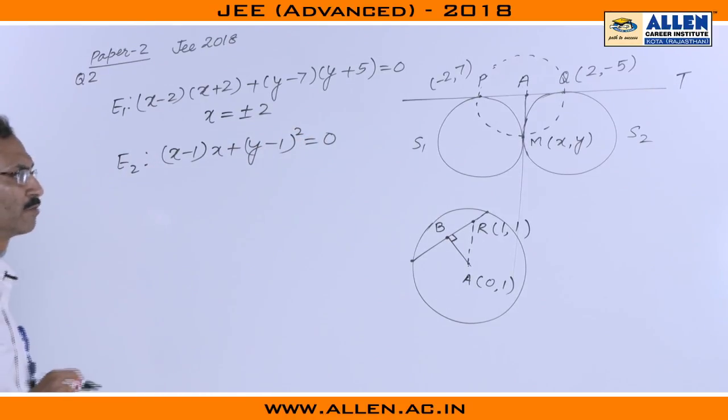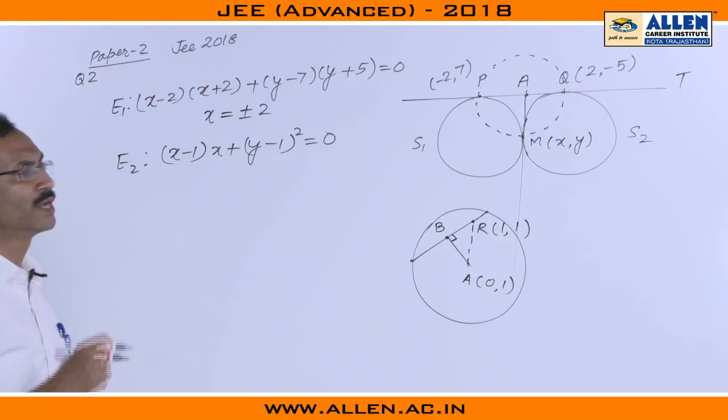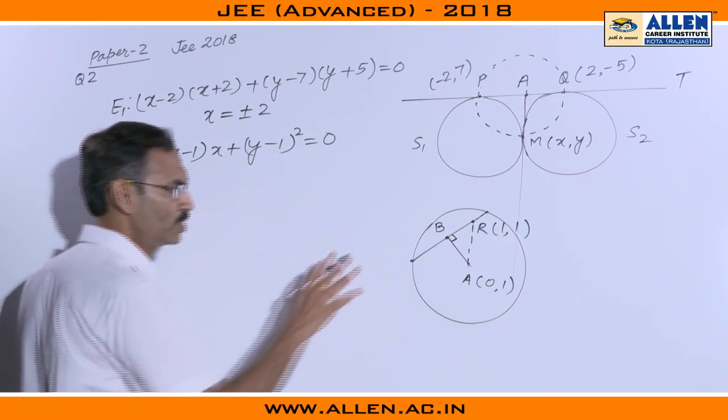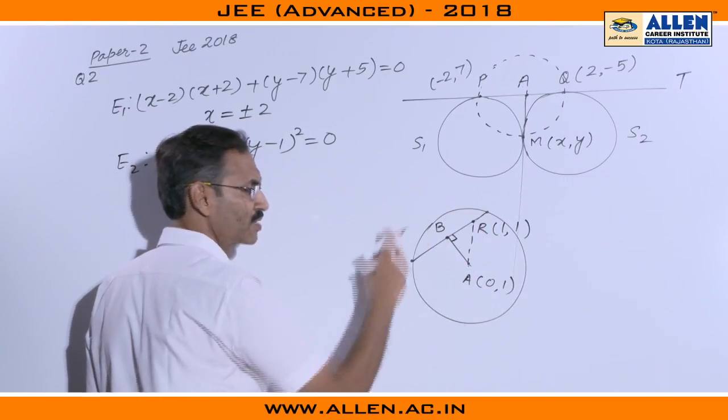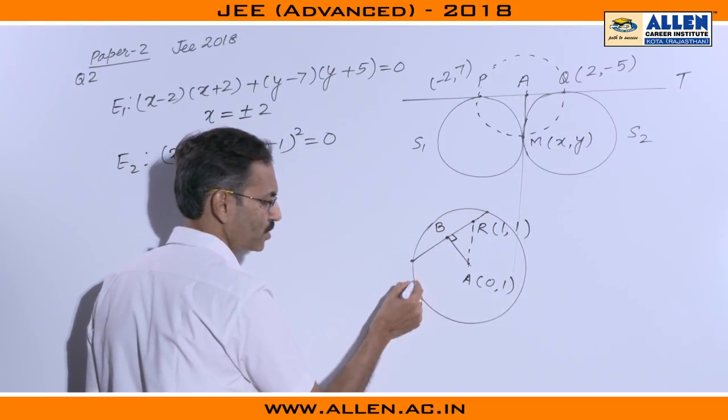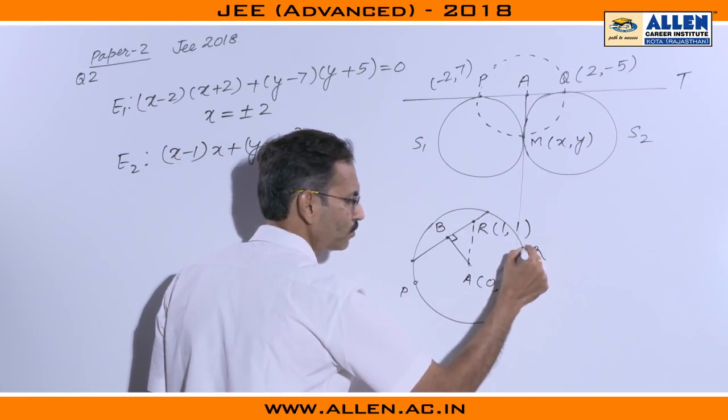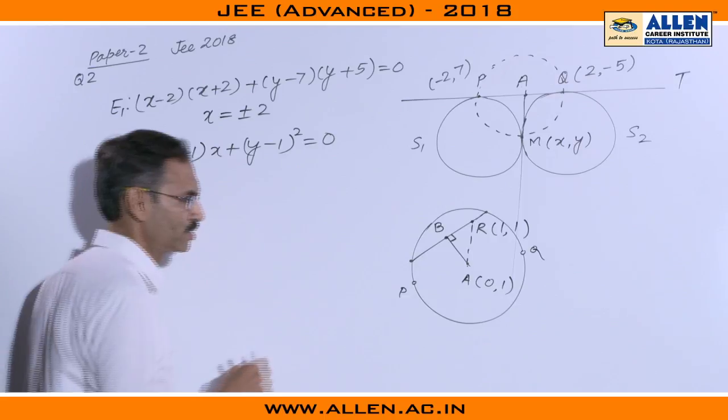But here again we have to be careful as we have dropped minus 2 comma 7 and 2 comma minus 5 from the locus. So these two points are not on the circle. Suppose this point is point P and this point is say Q, we have excluded these two points.